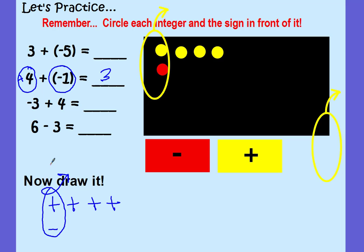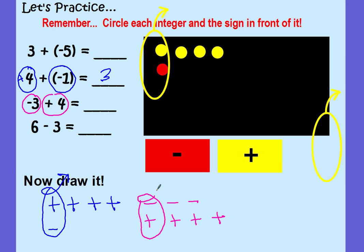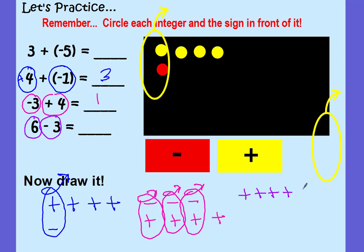Let's work the next example and draw the model. Circle your integers: a negative 3 and a positive 4. My first integer needs three negatives, and my second is a positive 4 — 1, 2, 3, 4. A negative and a positive make a zero pair. I loop one, two, three zero pairs individually. What am I left with? One positive. So negative 3 plus 4 equals 1. For the last example: 6 minus 3 — positive 6 and negative 3. Six positives and three negatives. I pull out three zero pairs, and what's left is three positives. So 6 minus 3 equals 3.